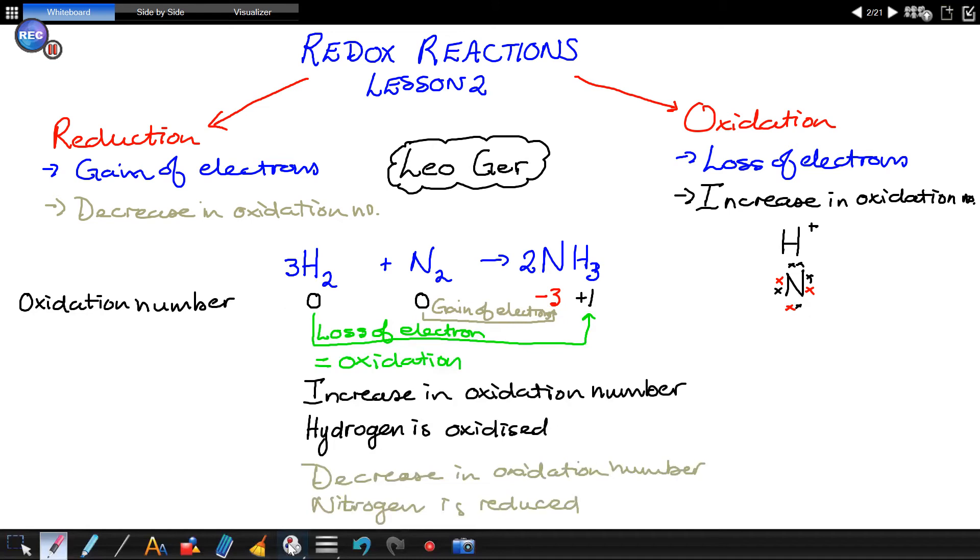The next concept I want to explain is the concept of reducing agent and oxidizing agent. Now, an agent is something that will cause another thing to happen. So, a reducing agent will cause reduction. In this reaction, nitrogen is reduced. It is reduced by hydrogen. So, hydrogen is the reducing agent.